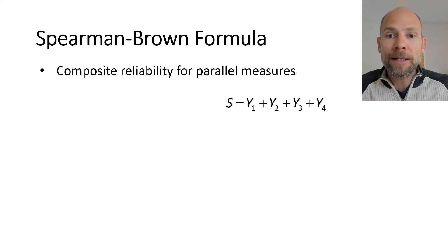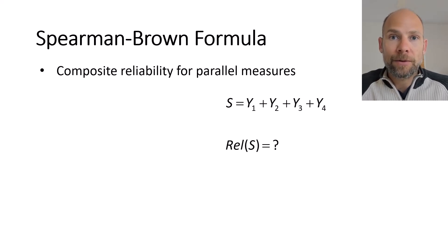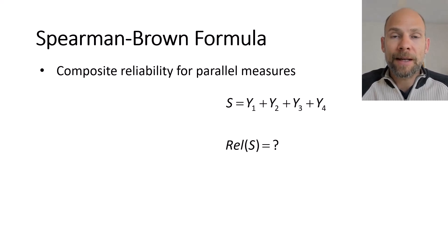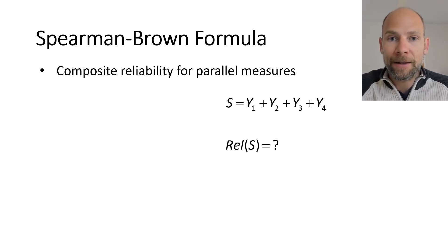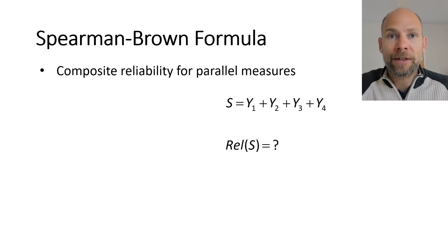So a composite is the sum or average of a number of test components or items, and the idea is that we want to find out about the reliability of the composite — how reliable is the sum score or the average score of our items. We can do that with the Spearman-Brown formula, assuming that measurements are parallel in the sense of classical test theory.